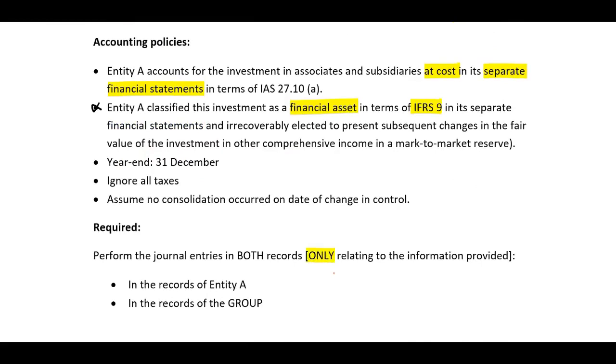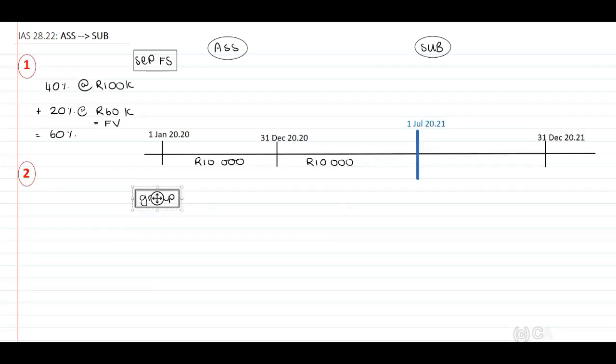Therefore, our first step, we need to identify the change. We know that this is an associate, which is now a subsidiary. We need to apply IFRS 3 for our level 2 students, IAS 28 paragraph 22. That paragraph only states that if this is a subsidiary, we need to apply IFRS 3 and IFRS 10. And then our next step, we need to include a timeline to ensure that we understand the scenario. Therefore, we have already performed step number one. We're now busy with step number two.